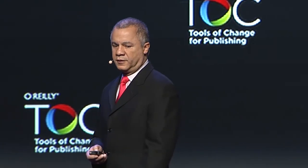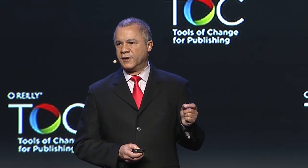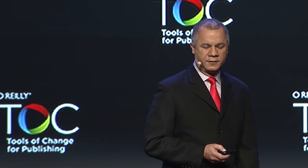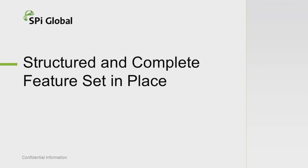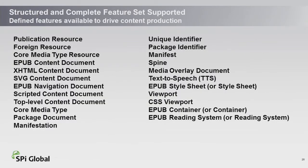HTML5 — if you follow some of the discussions, it's almost like an either-or. I don't think it is. Right now you get the best of both worlds: you get HTML5 and all the things it can give you, but you also get a defined application structure and a defined file structure out of EPUB3. The head of the IDPF said: as EPUB proliferates, there is no reason for support to continue to substantially lag browser support for HTML5. And I think we're seeing that in some of the applications we're doing. EPUB3 offers a structured and complete feature set — agreed, tested, worked out — that a lot of people understand.